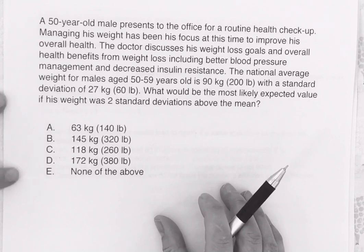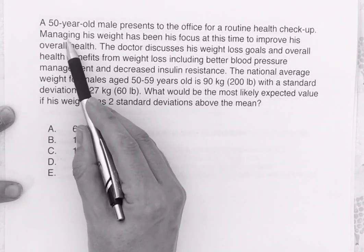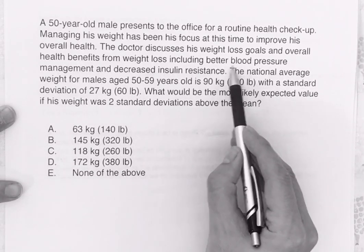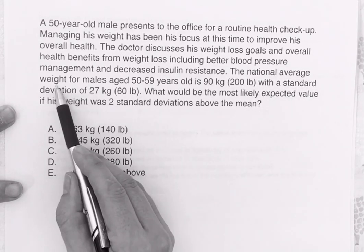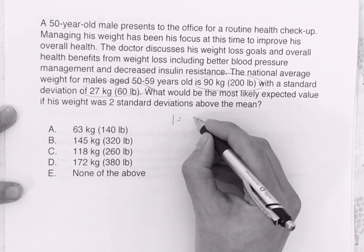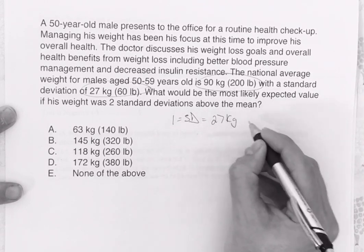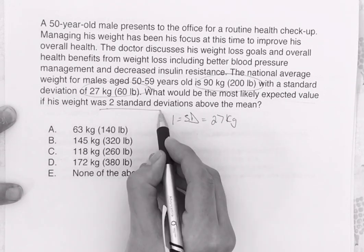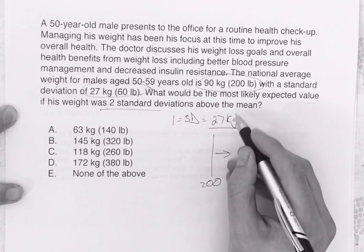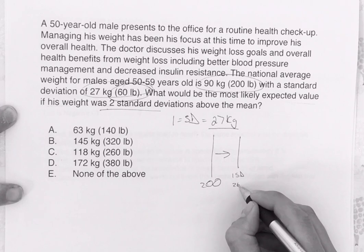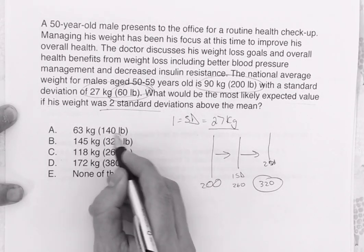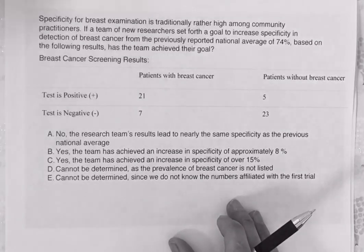Problem 2: A 50-year-old male presents for a routine health check focused on weight loss. The national average weight for males aged 15–59 is 90 kilos or 200 pounds, with a standard deviation of 27 kilos. What is the most likely expected value if this weight is two standard deviations above the mean? One standard deviation adds 60 pounds, making it 260. Two standard deviations gives us 320 pounds.